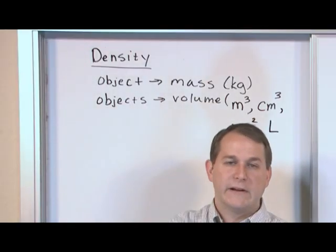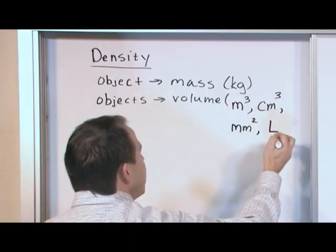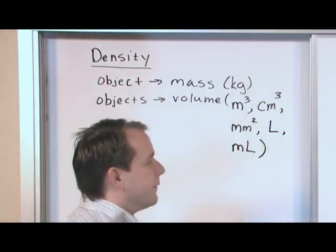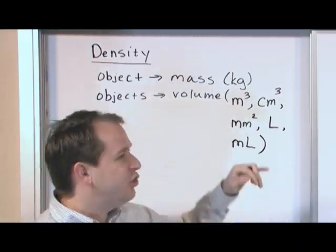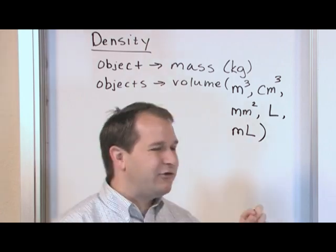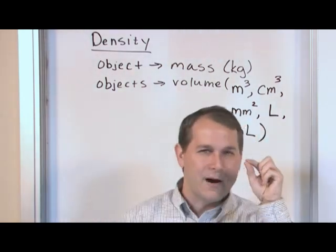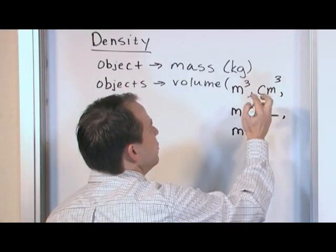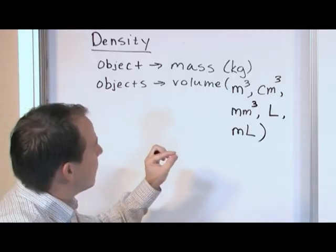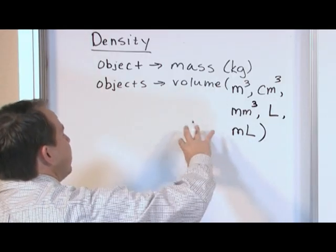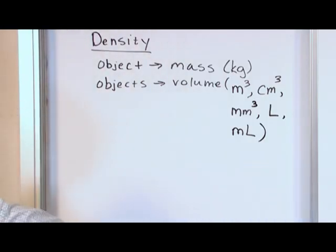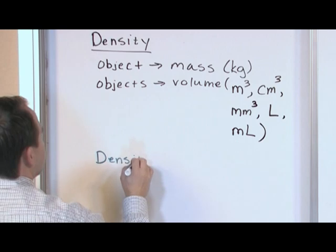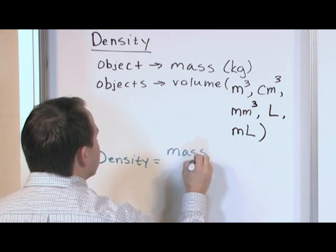We might also measure volume in liters — think of a two-liter bottle of soda — or milliliters, which is one one-thousandth of a liter. These are all different ways to describe the volume of something. When we combine mass and volume, density is equal to the mass divided by the volume.